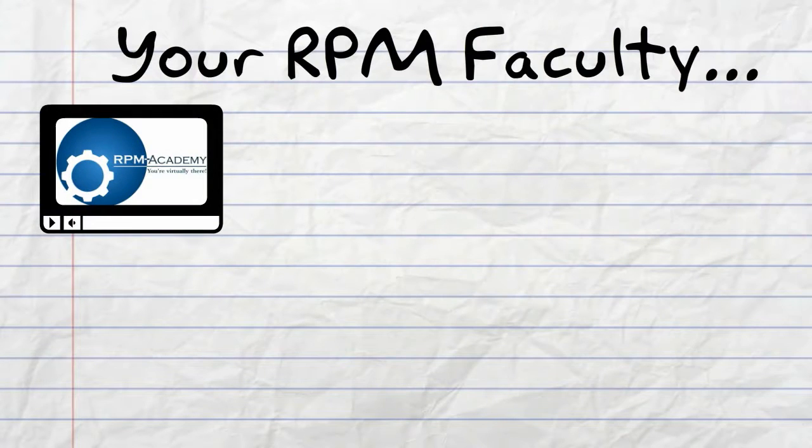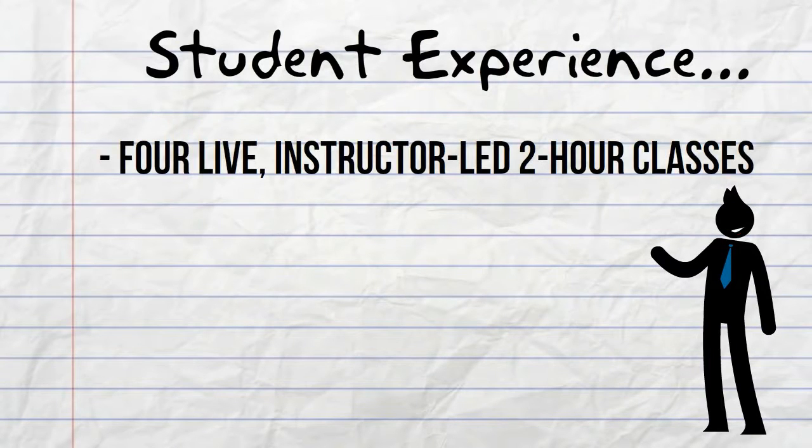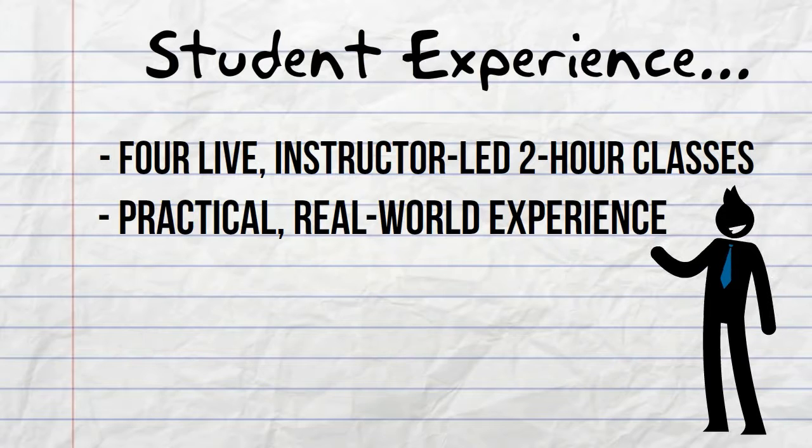When you register for an RPM Academy course, you will receive access to a faculty of experienced Lean Six Sigma professionals who will guide you in your journey towards certification. As an RPM Academy student, you will attend four live instructor-led two-hour classes, experience real-world multi-sector business applications of proven tools and methods.